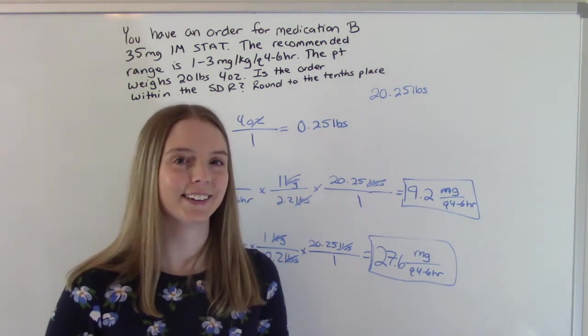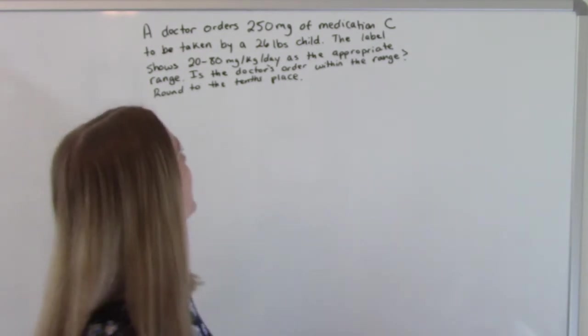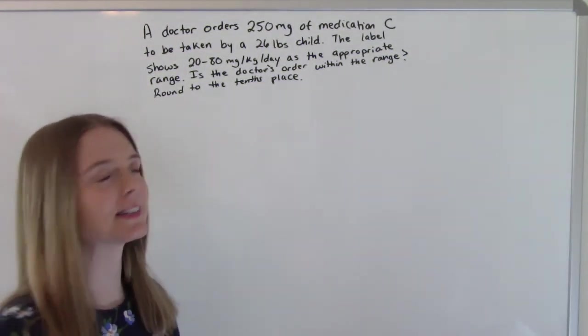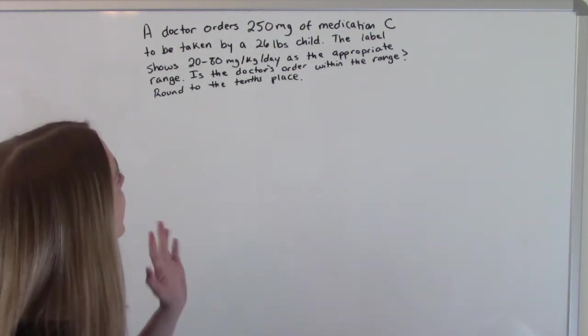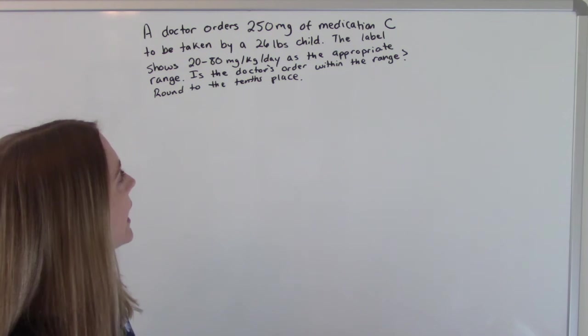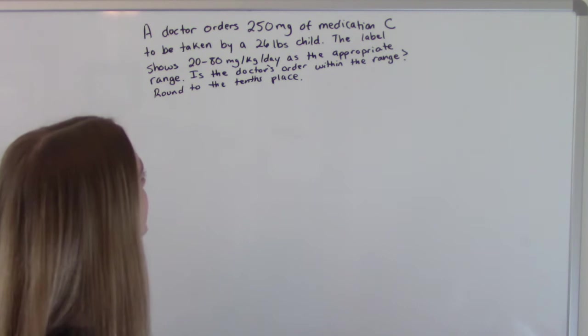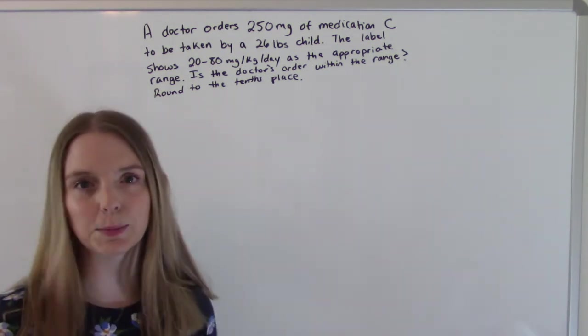Let's do one more. A doctor orders 250 milligrams of medication C to be taken by a 26 pound child. The label shows 20 to 80 milligrams per kilogram per day as the appropriate range. Is the doctor's order within the range? And they want us to round to the 10th place.